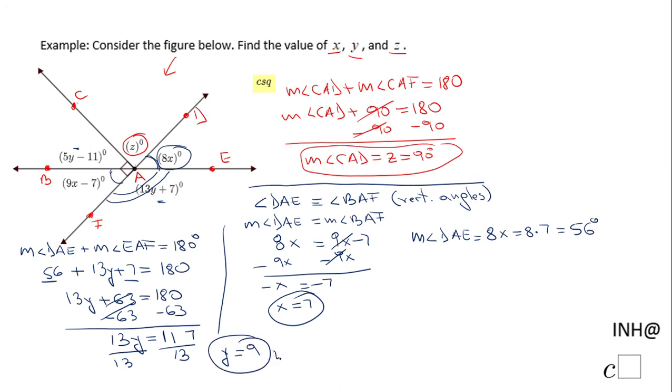And with this we finish the problem. We have y equals 9, x equals 7, z equals 90. If you enjoyed this little clip, don't forget to click the like button and come back to C Squared for more help. Thank you.